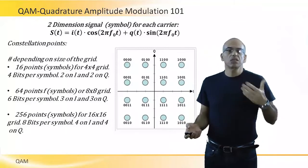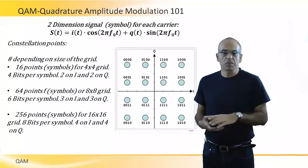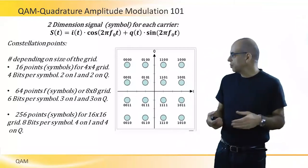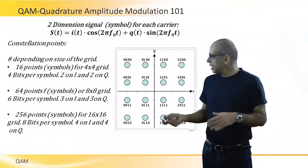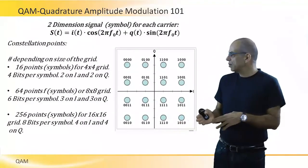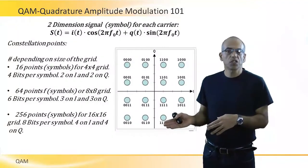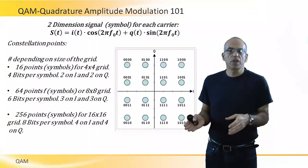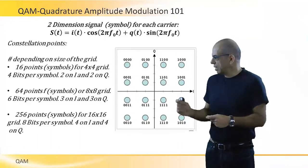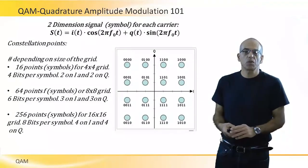In the same way we can scale it to QAM 256, which will be 16 by 16 and 8 bits of data per symbol. QAM is either single carrier or multi-carrier modulation, but in each carrier we have two dimensions that create a symbol representing the data we want to transfer.